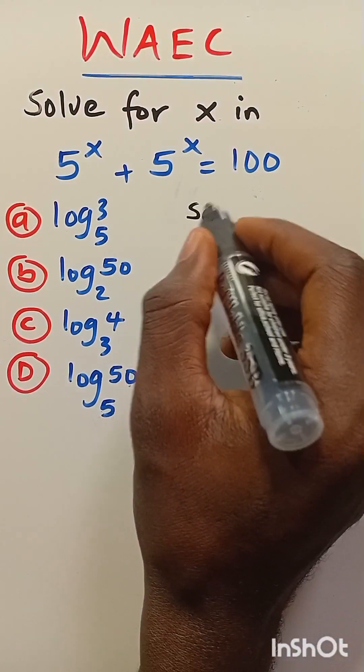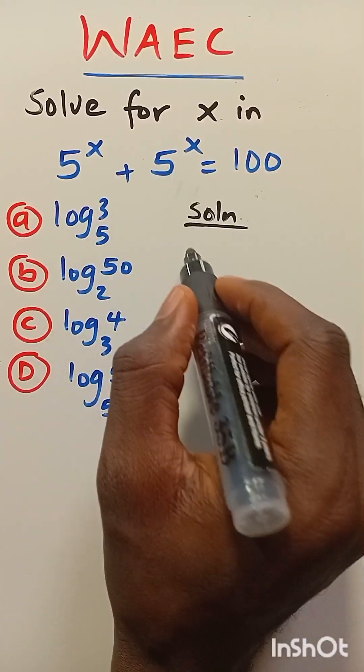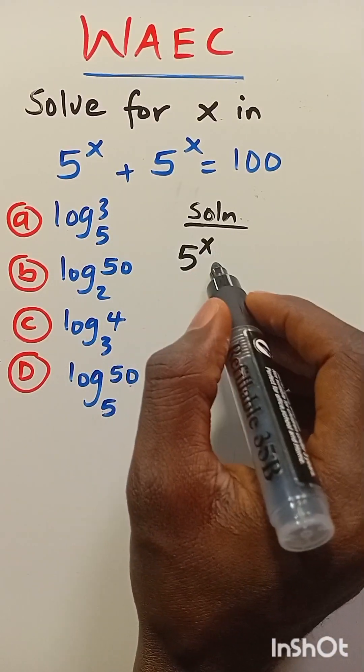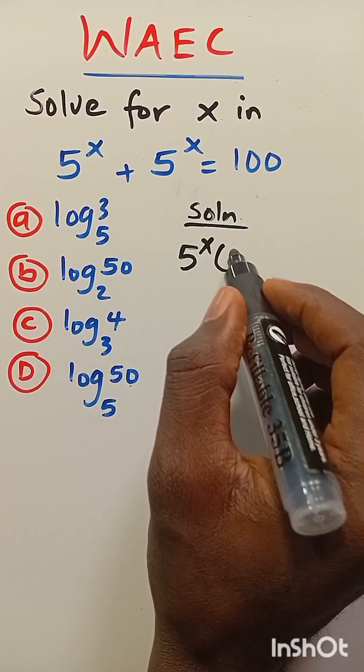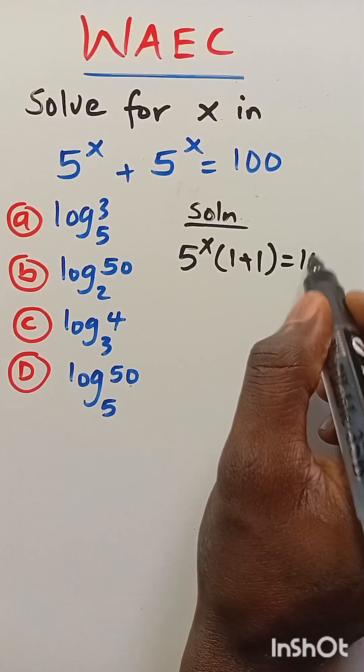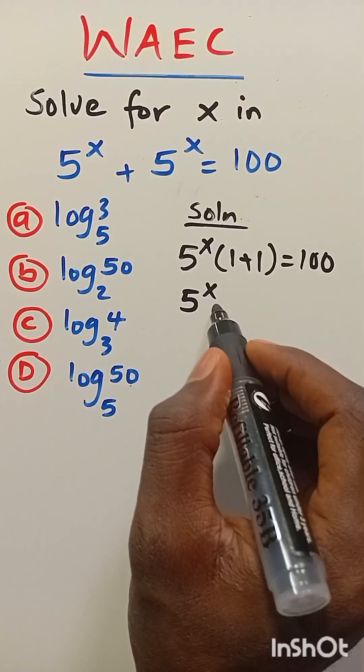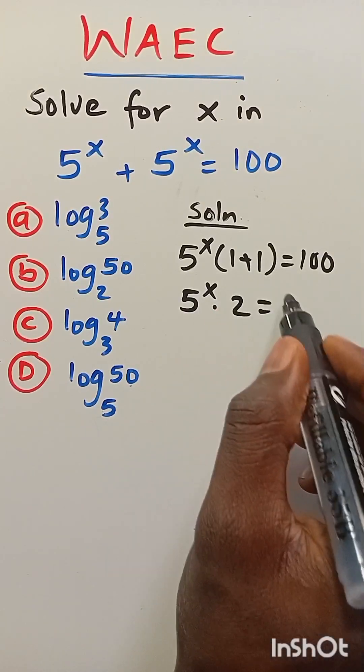Let's work through the solution. From here, 5 to the power of x is common. We can factor it out as 5 to the power of x. When we divide each term by 5 to the power of x, this will be 1 plus 1, which equals 100. So we have 5 to the power of x multiplied by 2 equals 100.